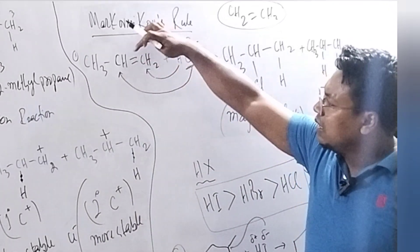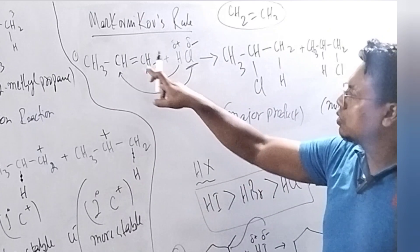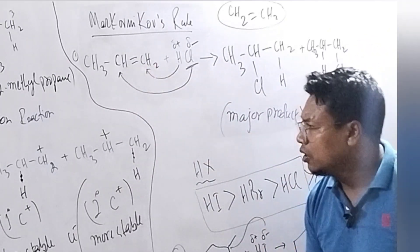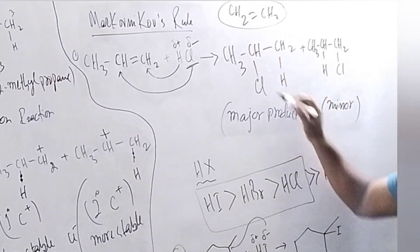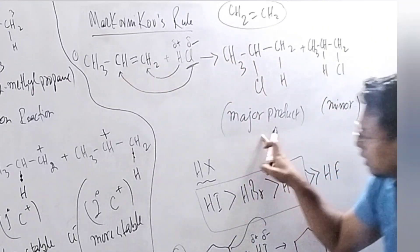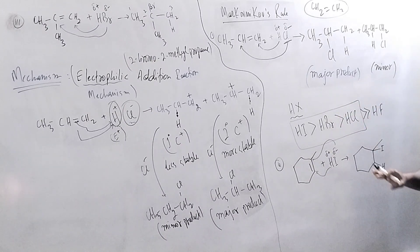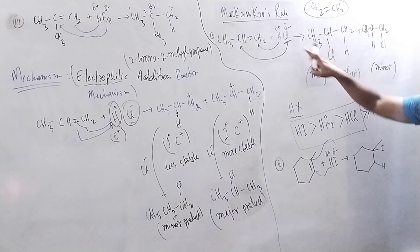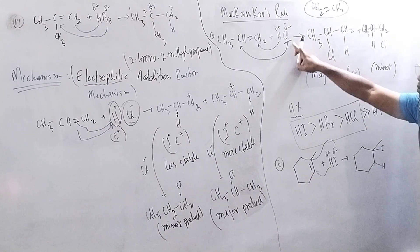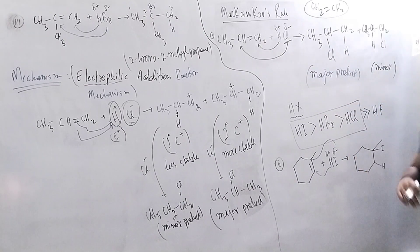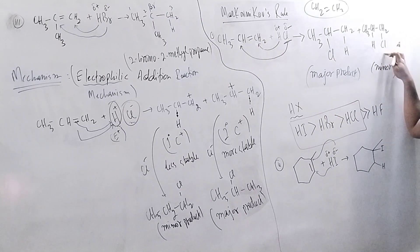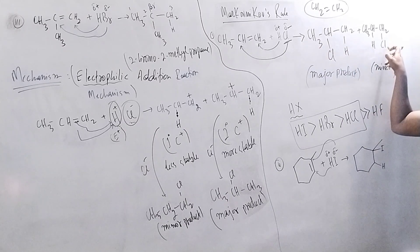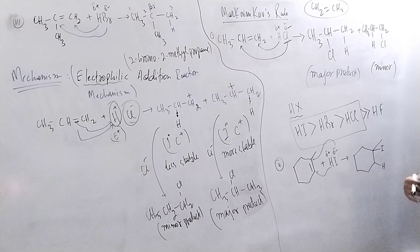When HCl is added, the negative part of the reagent — which is the halogen — goes to the double-bonded carbon atom having the lesser number of hydrogen atoms, and hydrogen goes to the carbon atom having the larger number of hydrogen atoms. So Cl goes to this double-bonded carbon atom — this will be our major product. Two-chloropropane will be the major product and one-chloropropane will be the minor product.